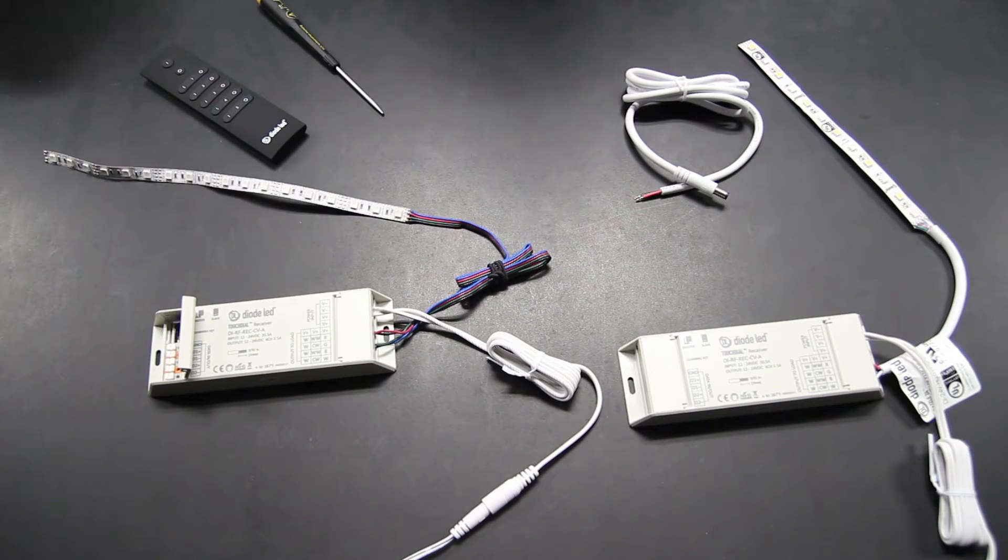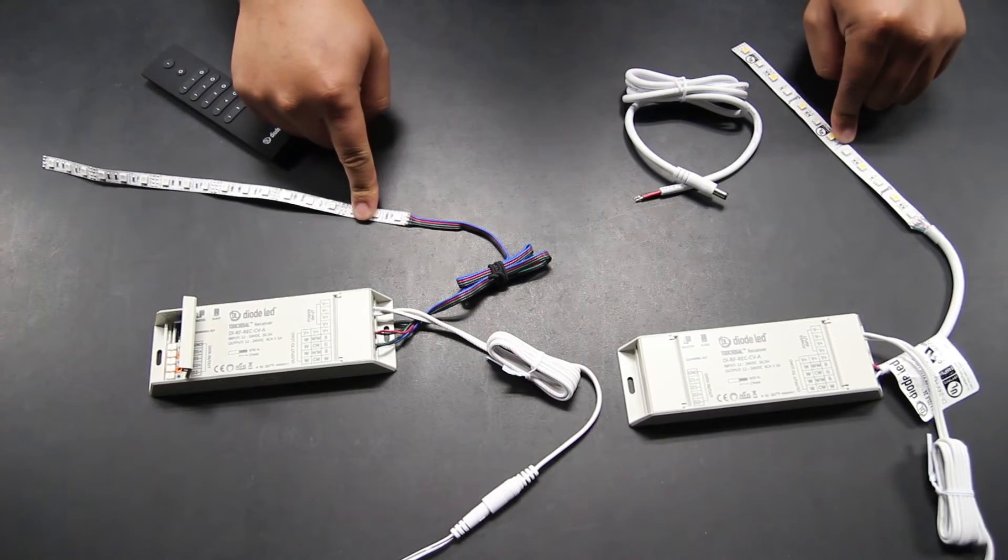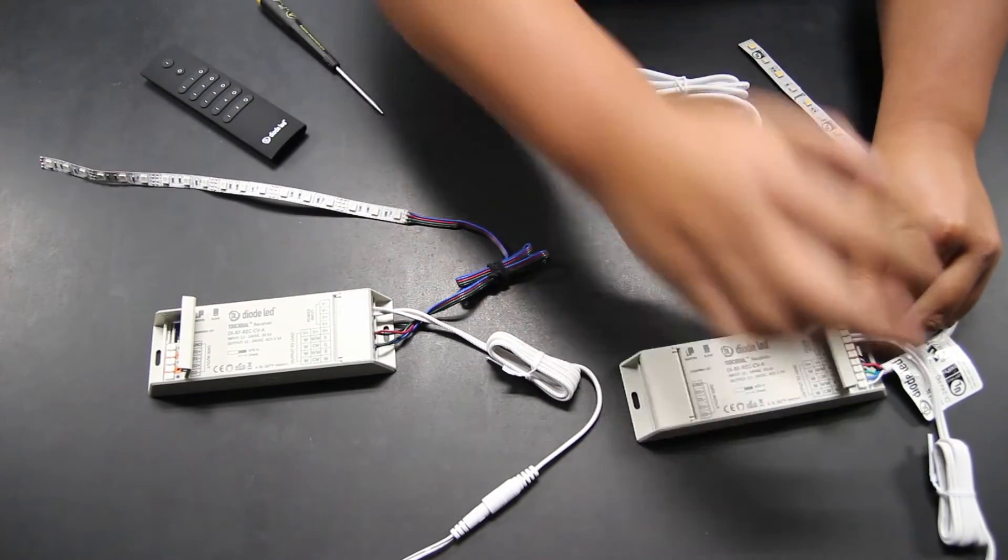Using our demo from part one, disconnect power to the TouchDial receivers and open both lids on all receivers.